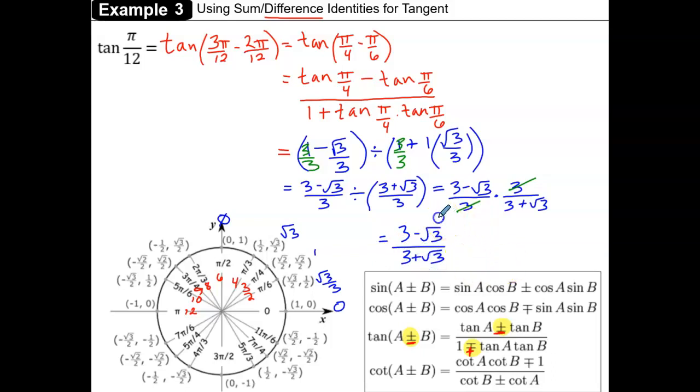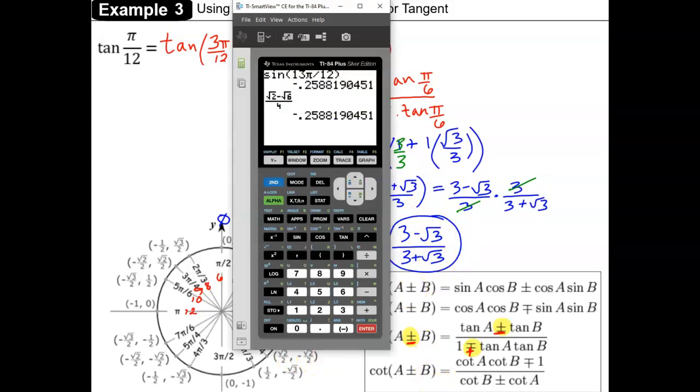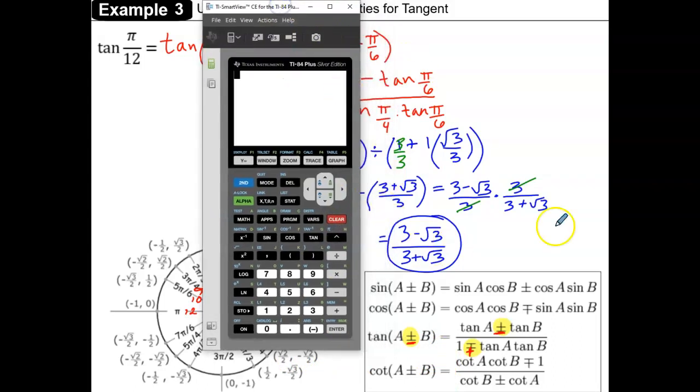Usually we would rationalize the denominator, but that's a lot more work than what we really need to do for this problem. So it's fine to leave this in the form 3 minus root 3 over the quantity 3 plus the square root of 3. But you do want to check your answer to make sure that you didn't make any calculation errors or simplifying errors.